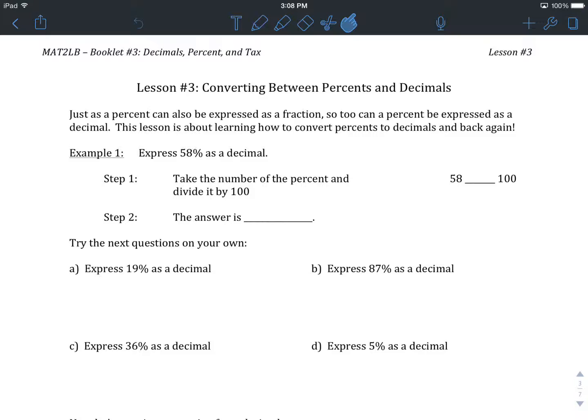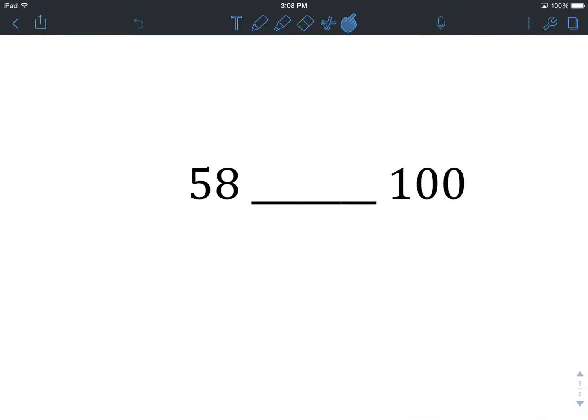We're going to start by looking at the first example. We're trying to express 58% as a decimal, and there are two steps for this. It's kind of one step, and the second step is just writing your answer. We're going to take whatever our percent number is, so the number in front of our percentage sign, and we're going to divide it by 100. I'm going to be typing mine into a calculator, so we're going to take whatever number was in front of our percentage sign, in this case it's 58,